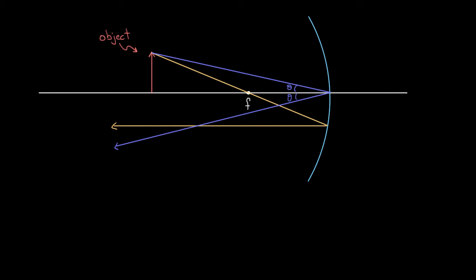The image of this object is going to be at the point where the rays cross, so the tip of the object gets mapped to this point right here, and we get an image that's upside down. Ray tracing is cool — it lets you find where the image is — but I kinda eyeballed this angle, which might have been off by a degree or two. If I wanted to get exactly where the image is, I'd want an equation I could just plug into: how far was the object from the mirror and how long is the focal length, and it would spit out exactly where the image is going to be.